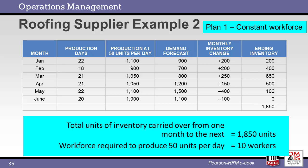For this example, we now review the production capacity versus the customer demand. When capacity exceeds demand, inventory increases. When demand exceeds capacity, inventory goes down. The table shows the running inventory over time. With a goal of 50 units per day, 10 workers are required. The total inventory carried over from one month to the next totaled 1,850 units. Based upon this analysis, the next step is to calculate the costs.